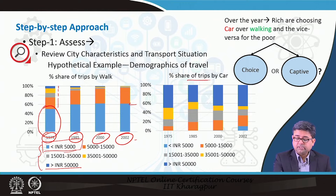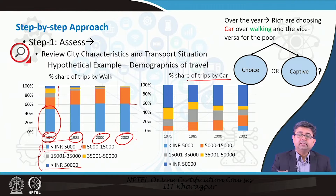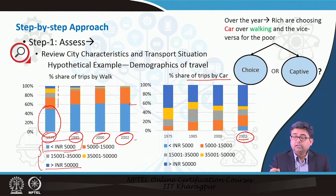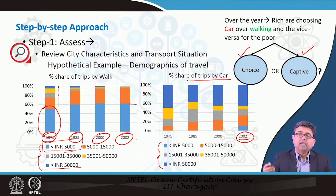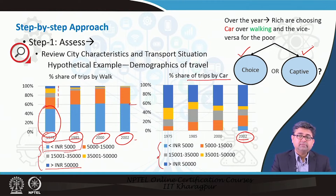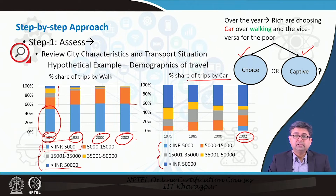The second chart shows the percentage share of trips by car. Having this kind of data from your comprehensive mobility plans allows you to understand where your city currently stands. The important thing is to understand whether people are choosing to walk or use non-motorized modes, or whether they are captive users. Captive users are usually people who do not have a choice — maybe they are socio-economically poor or live in remote areas where there is not enough infrastructure. That is the difference between a choice user and a captive user.